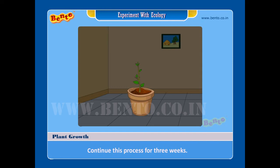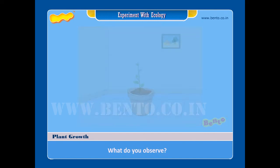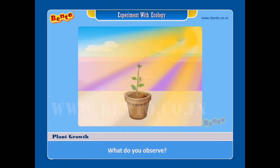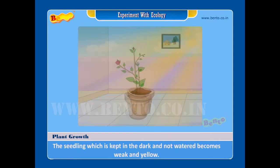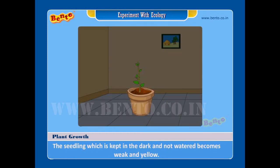What do you observe? The seedling which is watered properly and kept in light shows a healthy growth. The seedling which is kept in the dark and not watered becomes weak and yellow. The environment affects growth in plants.